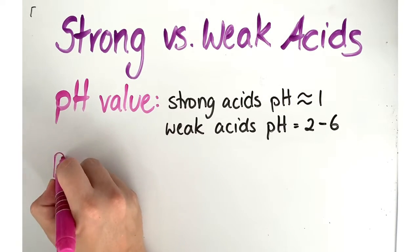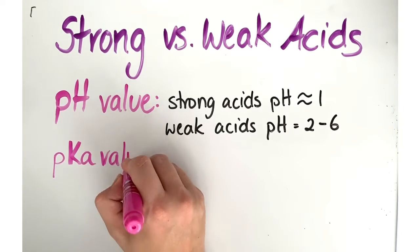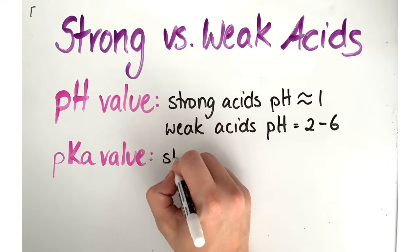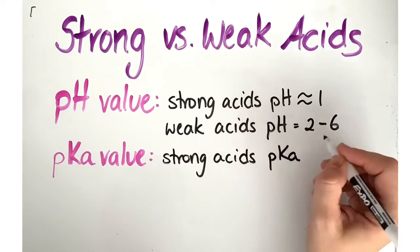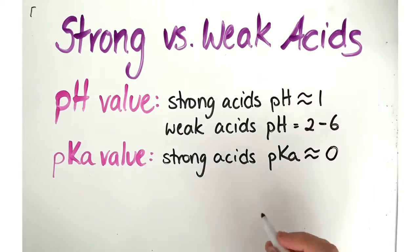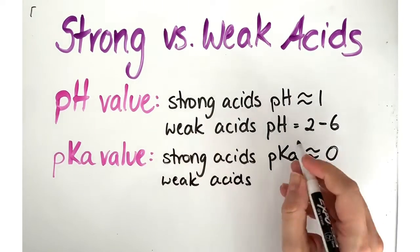The other way we can identify strong versus weak acids is by looking at the pKa value. Now the pKa is a number that communicates how strong or weak an acid is, based on how many hydrogen ions are in solution. A strong acid will have a pKa value close to 0, while a weak acid will have a high pKa value.